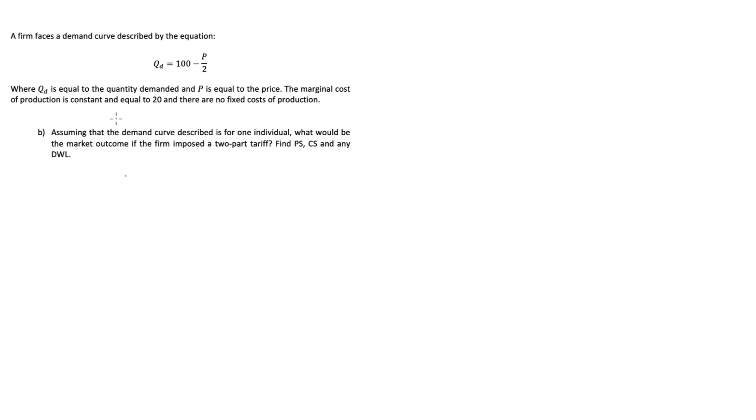We're told in the question that a firm faces a demand curve described by the equation QD equals 100 minus P over 2, where QD is equal to the quantity demanded and P is equal to the price. The marginal cost of production is constant and equal to 20, and there are no fixed costs of production.